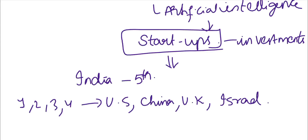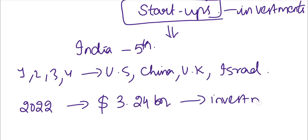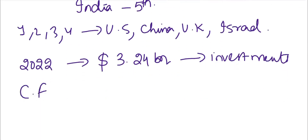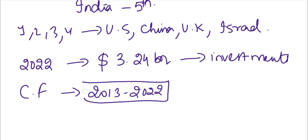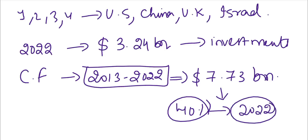India's rank in this AI Index is fifth. Countries ranked above India include the US at first, followed by China, UK, and Israel. Germany, Canada, and Australia also feature. In 2022, almost $3.24 billion in investment flowed into Indian AI startups. The total cumulative funding from 2013 to 2022 was almost $7.73 billion, with more than 40% of that coming in 2022 alone.